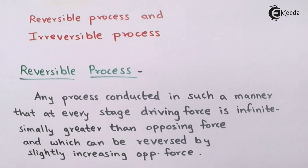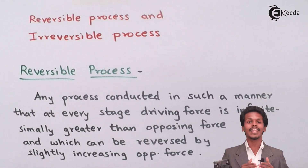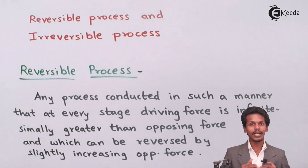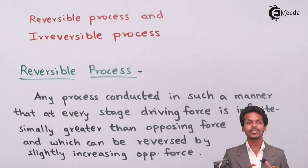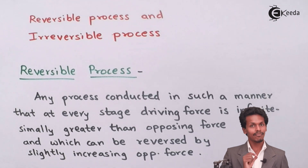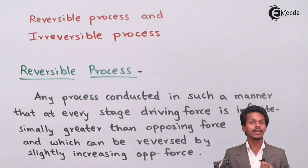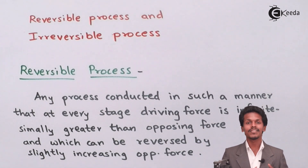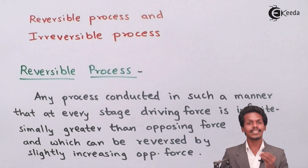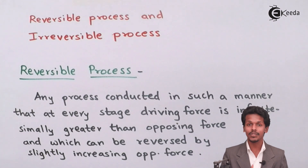This is basically similar to thermodynamic equilibrium. For instance, in a mechanical equilibrium, the driving force and the opposing force cancel each other out or are balanced. If they are balanced, the driving force and opposing force are almost equal. So if we make a slight increase in the opposing force, the overall process will be reversed, because initially the driving force and opposing force are equal, and increasing one slightly will change or reverse the process.